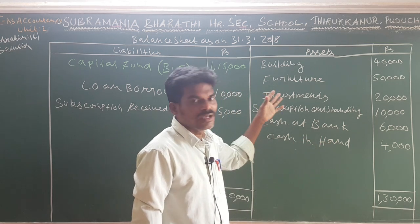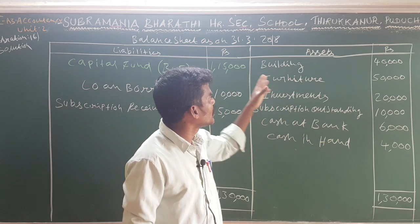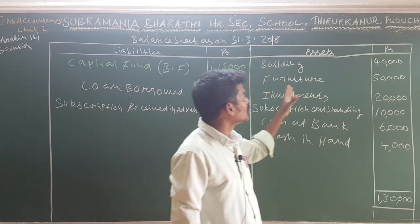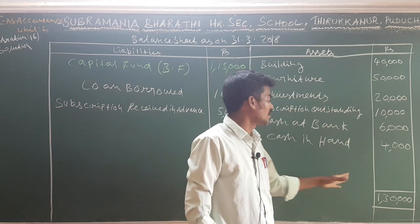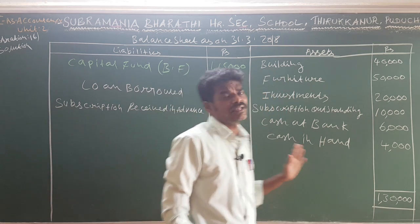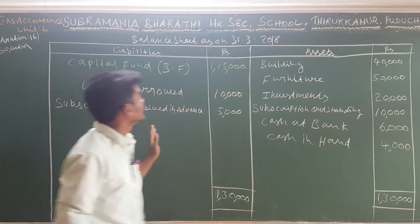Cash in hand 4,000. The total asset side amount is 1,30,000.